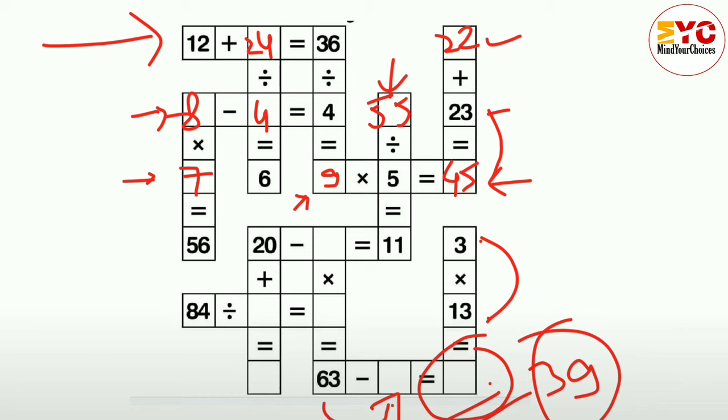Now come down. 20 minus which number is equal to 11? Definitely 9. So 20 minus 9 is equal to 11. Now you can see here, this one. Now we have to fill this one.